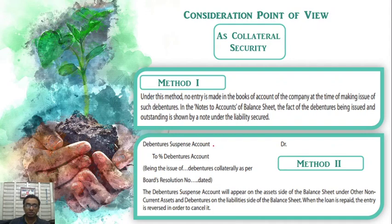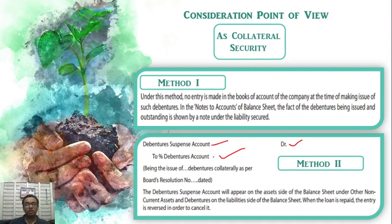The third method uses a debenture suspense account. You credit the debenture suspense account, and it will debit the debentures. The debenture suspense account will be treated accordingly. If the loan is repaid, the debenture suspense account entry will be cancelled and the effect will be null.